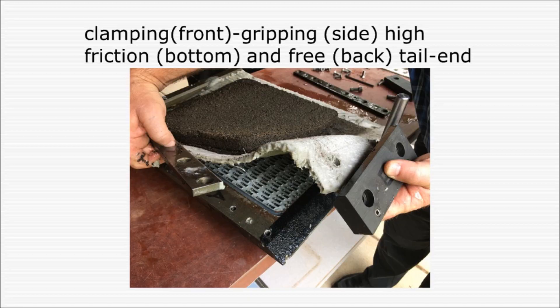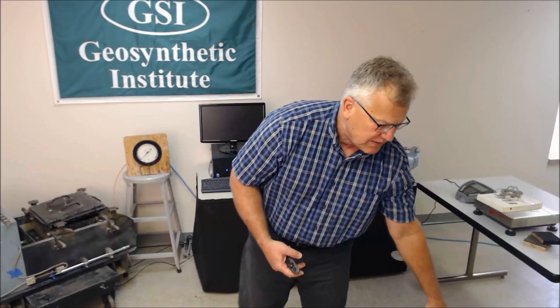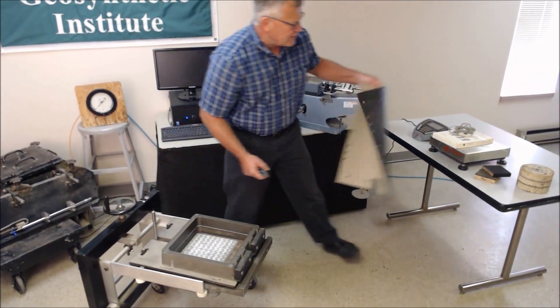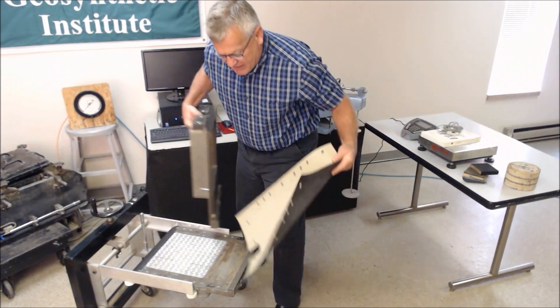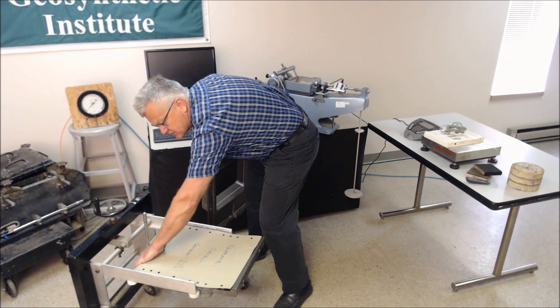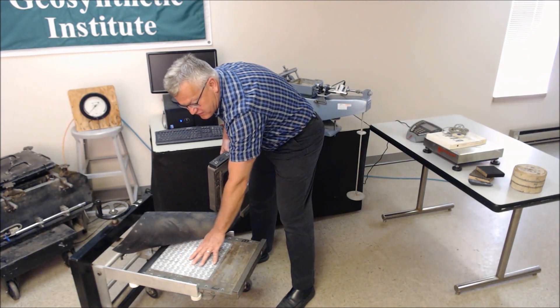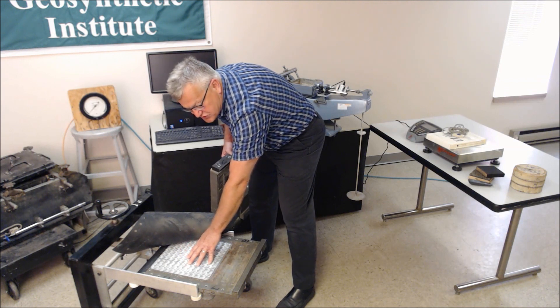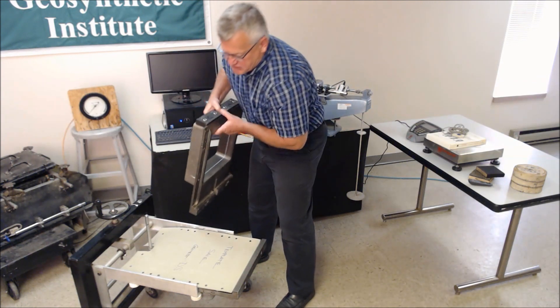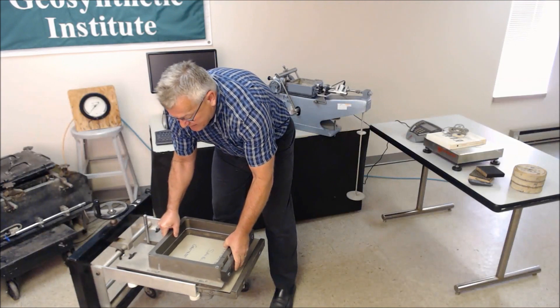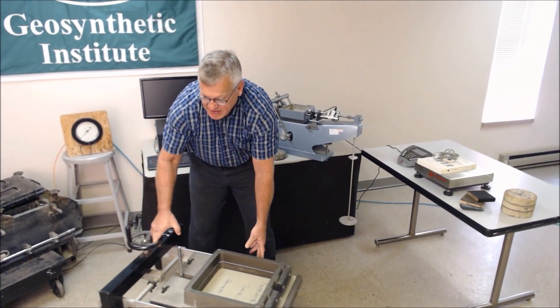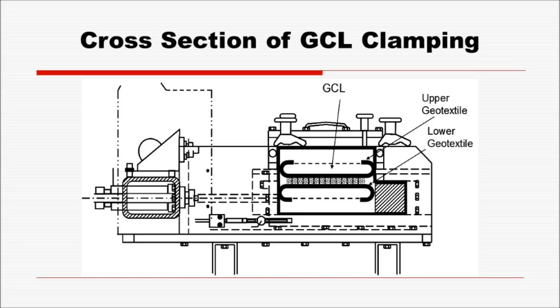As far as clamping is concerned, there are three types of gripping used. The bottom material can have a front clamp, side clamps, and a very high frictional interface at the bottom—used particularly for GCLs. Obviously, the gripping can interfere with the shearing, and it's prescribed per manufacturer based on their equipment. For very extreme cases, sometimes you'll do a wrap-around configuration, but you have to keep the area correction in consideration.